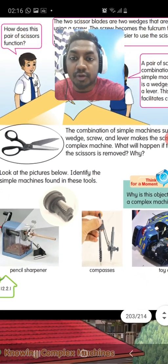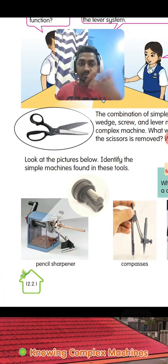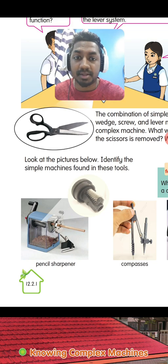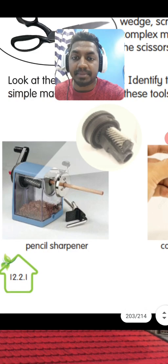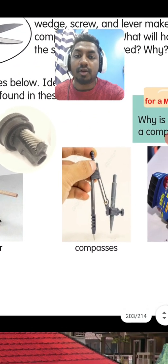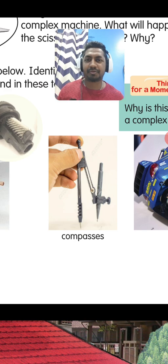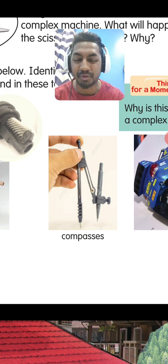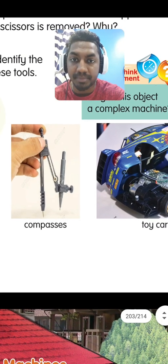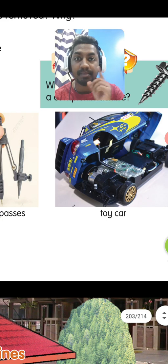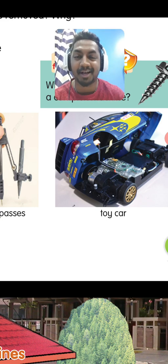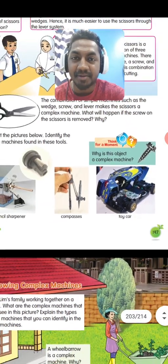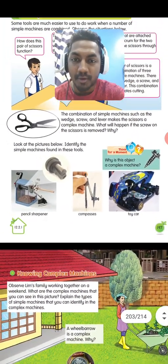What are the other complex machines you should know about? Around you, for example, a pencil sharpener — this kind of pencil sharpener, not the normal one. And then a compass. Most primary students don't use the compass; mostly secondary students will be using it. You also have a toy car — I'm pretty sure most of you have played with a toy car. So these are examples of complex machines.